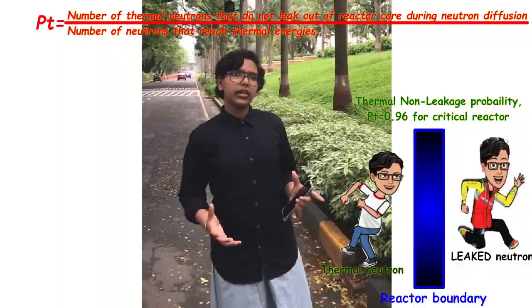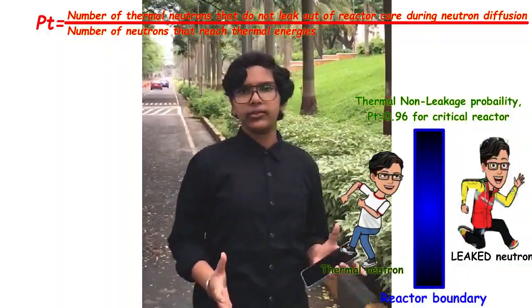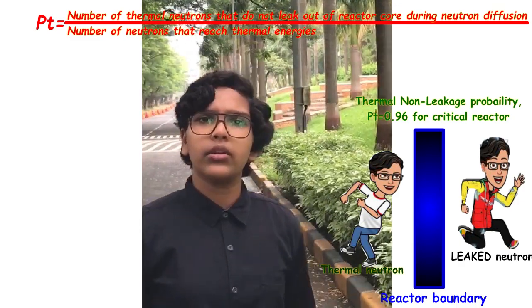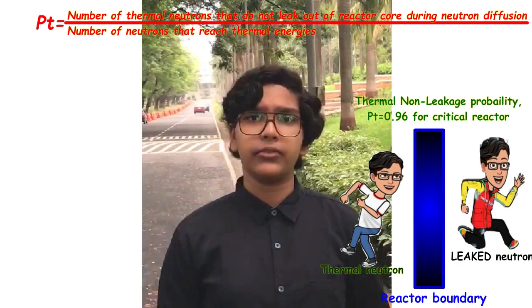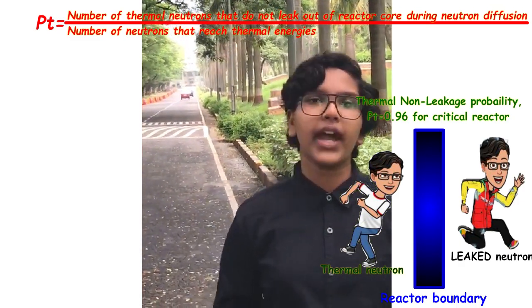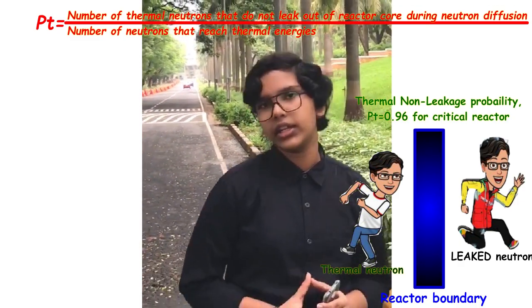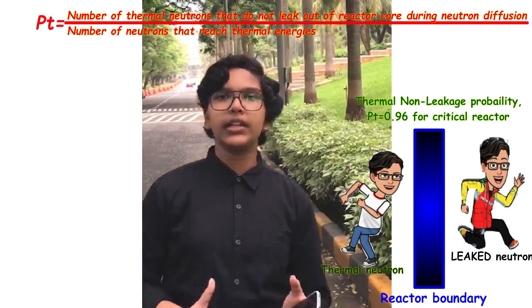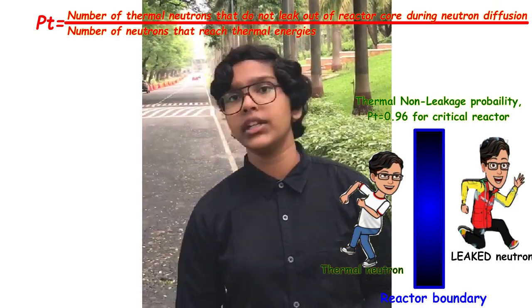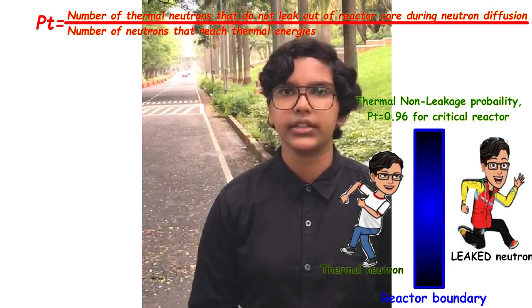Now that you are safe to continue your journey towards fission, you might want to leak out as a thermal neutron. So the fourth factor, thermal non-leakage probability, tells us about the thermal neutrons which have not leaked out of the reactor.